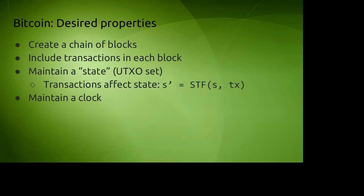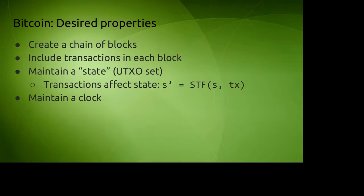Let's take Bitcoin as a simple example. On a high level, Bitcoin creates a peer-to-peer digital currency. On a functional level, we want to create a chain of blocks containing transactions. The Bitcoin blockchain maintains some notion of state — in Bitcoin that's how much money everyone has; in Ethereum it's balances plus smart contract code and state. Transactions affect the state: if I have 100 Bitcoins and send 70 to Christian, the new state says I have 30 and Christian's balance increases by 70.